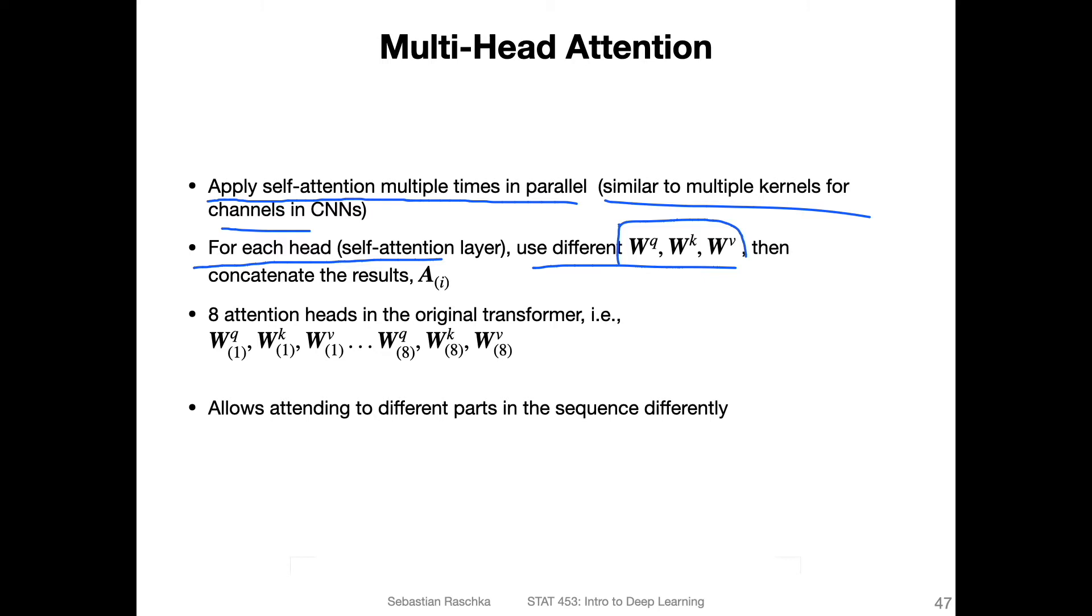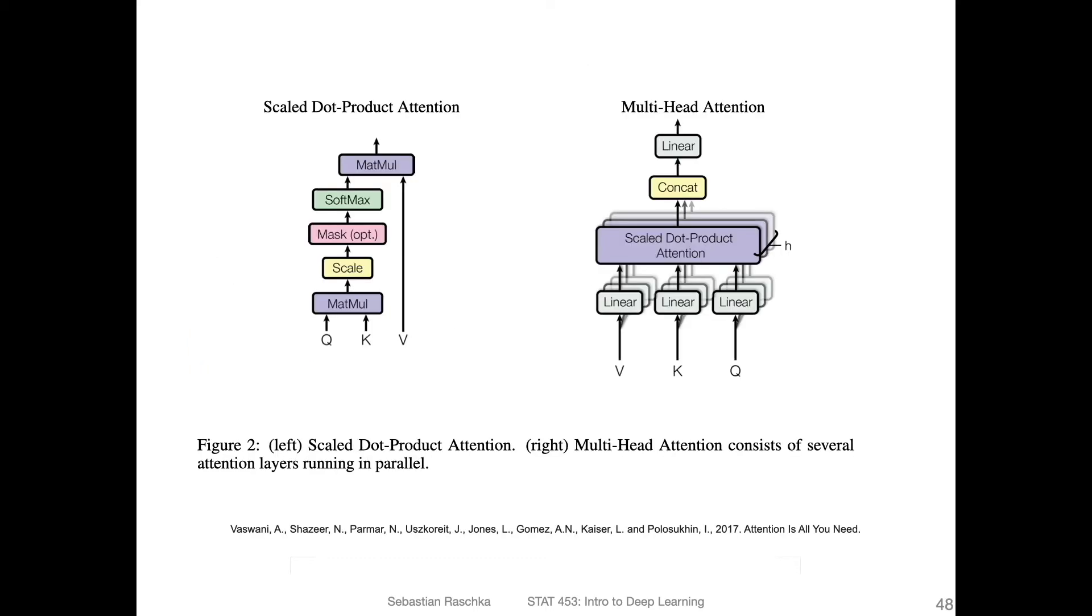In the original attention is all you need paper, they had eight attention heads. So essentially, they had eight times three matrices. So each attention head had a set of the query, key and value matrix. And we had eight of those sets. And this allows the model to attend to different parts in the sequence differently for each head. It's similar to the concept behind color channels, essentially output channels.